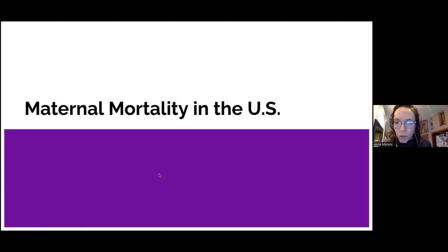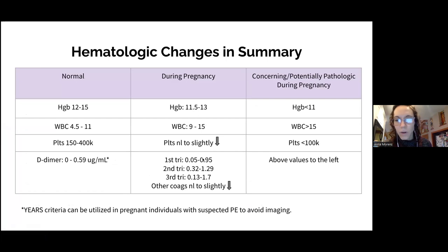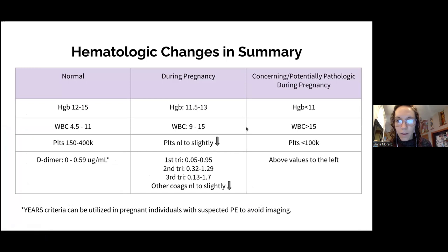Regarding D-dimer: there are different cutoffs for D-dimer levels during pregnancy — first, second, and third trimester — and the YEARS criteria can be used to help risk stratify when considering imaging for PE. D-dimer levels vary so much in pregnancy that they are not that helpful in pregnant patients; if there is clinical concern, we move to the next step rather than relying on D-dimer alone.